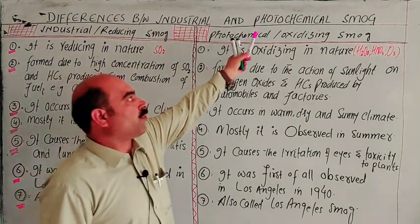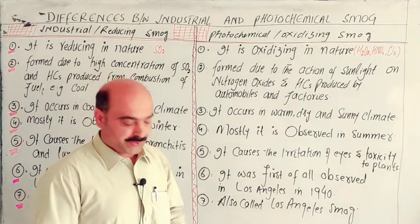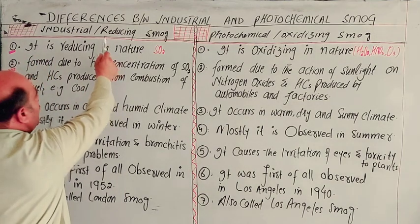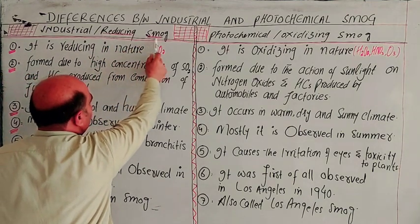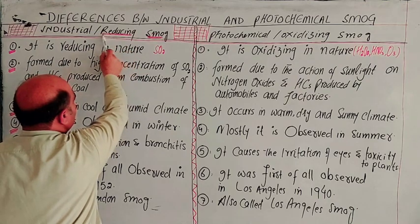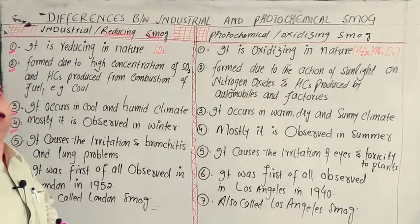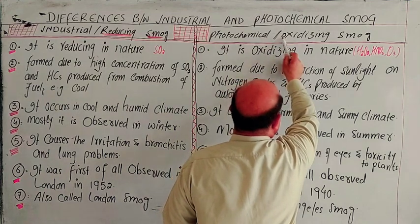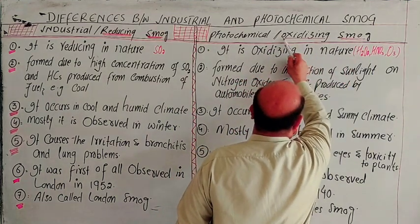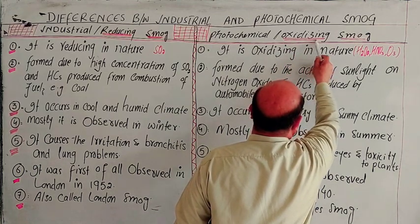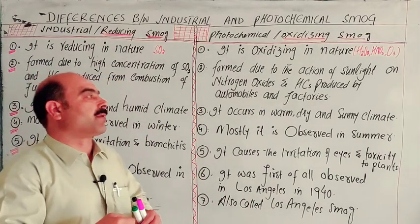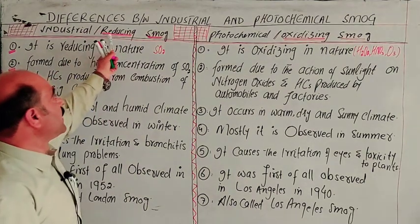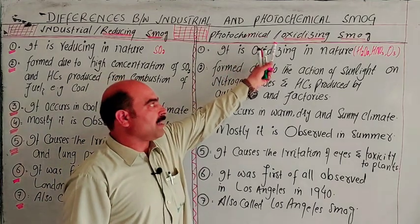The differences: difference number one — industrial smoke is also called reducing smoke. On the other side, photochemical smoke is also called oxidizing smoke. This is the industrial smoke and the other side is the photochemical or oxidizing smoke.